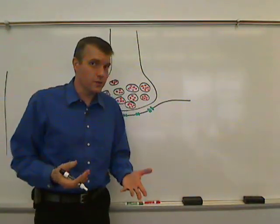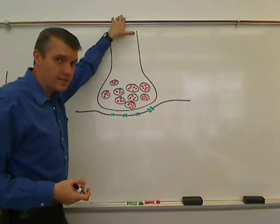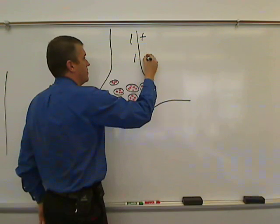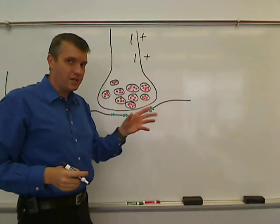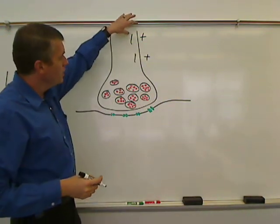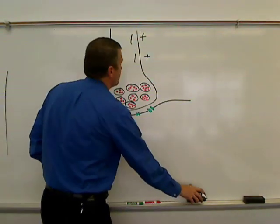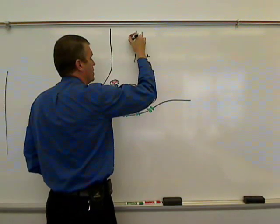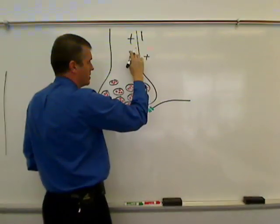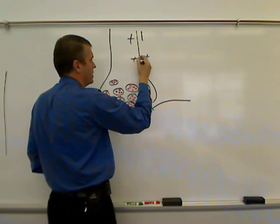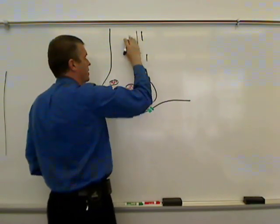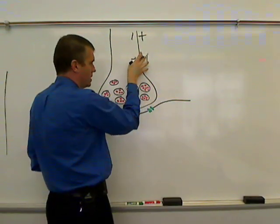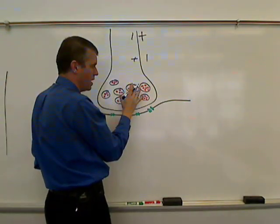You remember action potentials. This is an axon, and axons undergo action potentials. At resting state, the inside's negative and the outside's positive. But when an action potential comes down, the charge flips — we go from positive on the outside to negative on the outside, and positive on the inside. This stimulates the next area, and the area behind it returns to resting. This charge change now reaches the axonal bouton.